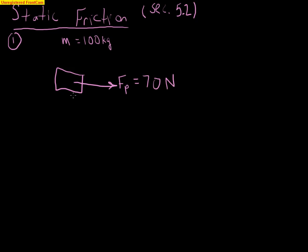First example: we have an object and we're pushing on it with a force of 70 newtons. Let's say this is a couch. The couch has a mass of 100 kilograms. We push on it and it does not move, so it's at rest. If it's at rest, that tells us something important about the forces — it tells us that all the forces acting on it are balanced.